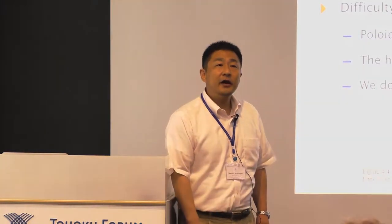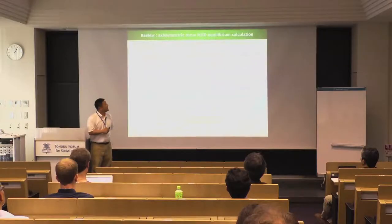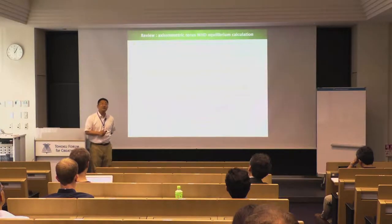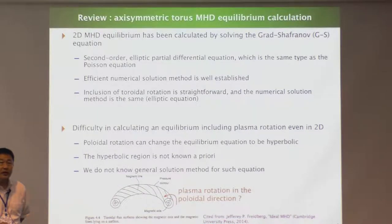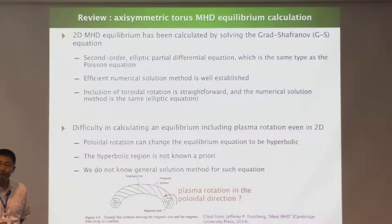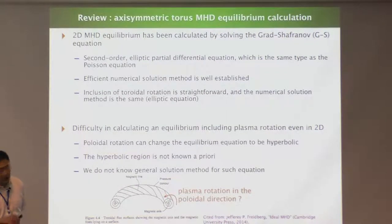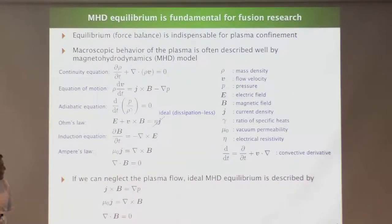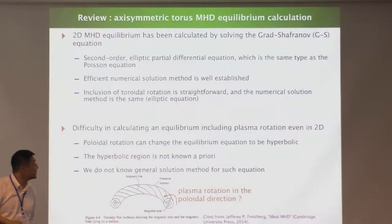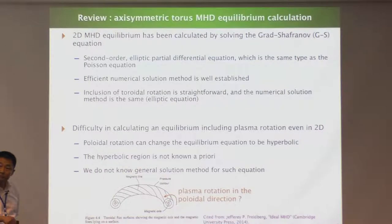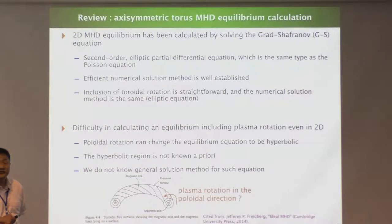In a two-dimensional axisymmetric system, the equilibrium equation can be significantly reduced to a single second-order elliptic PDE called the Grad-Shafranov equation, which is very easy to solve because the equation type is the same as Poisson's equation. Even if we include plasma flow in the toroidal direction, the equation type doesn't change and remains elliptic.